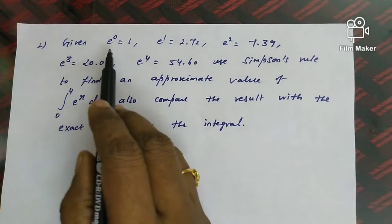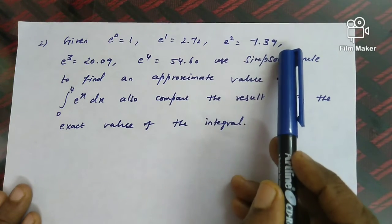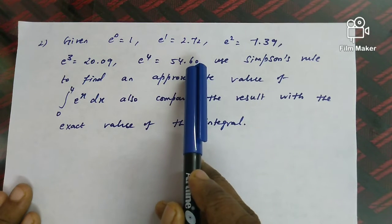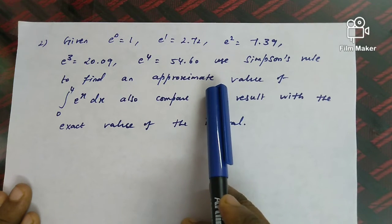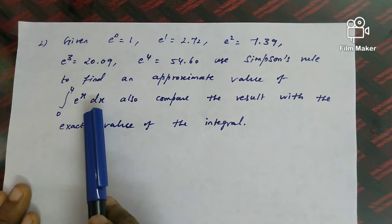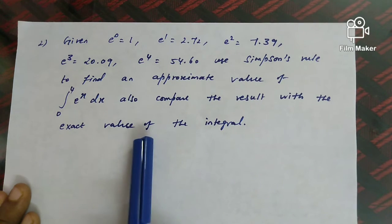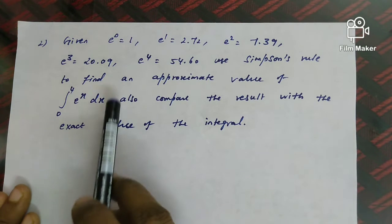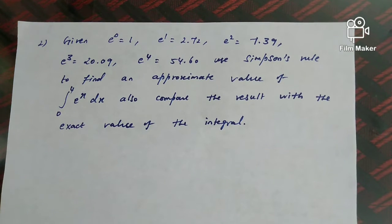Problem 2: Given that e⁰=1, e¹=2.72, e²=7.39, e³=20.09, e⁴=54.60, use Simpson's rule to find an approximate value of ∫₀⁴ eˣ dx. Also compare the result with the exact value of the integral.